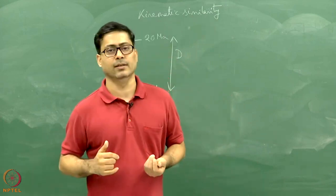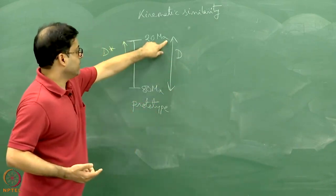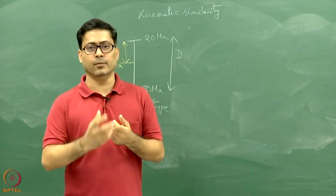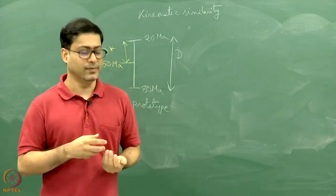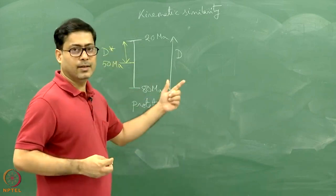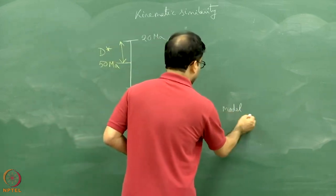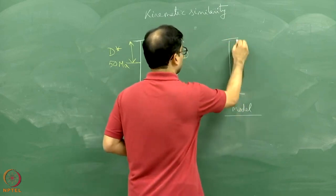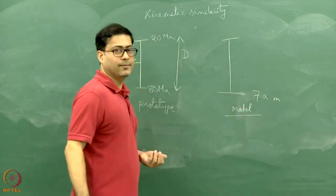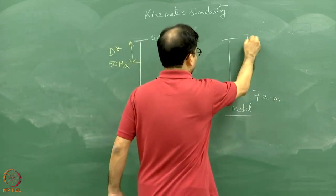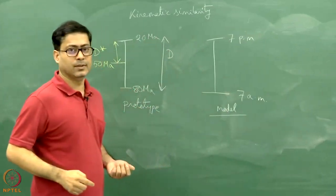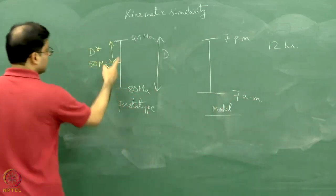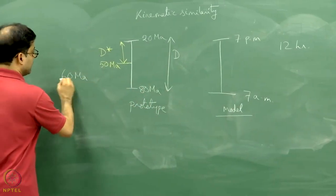Or D was a single deformation and D-star involved some soft magmatic material which was hot and entered the deforming rock body, making the rock much softer. In the analog model we cannot run it for 80 to 20 million years, so we think realistically. We start the experiment at 7 am and want to finish at 7 pm — a 12-hour experiment — equivalent to the 60 million year duration.